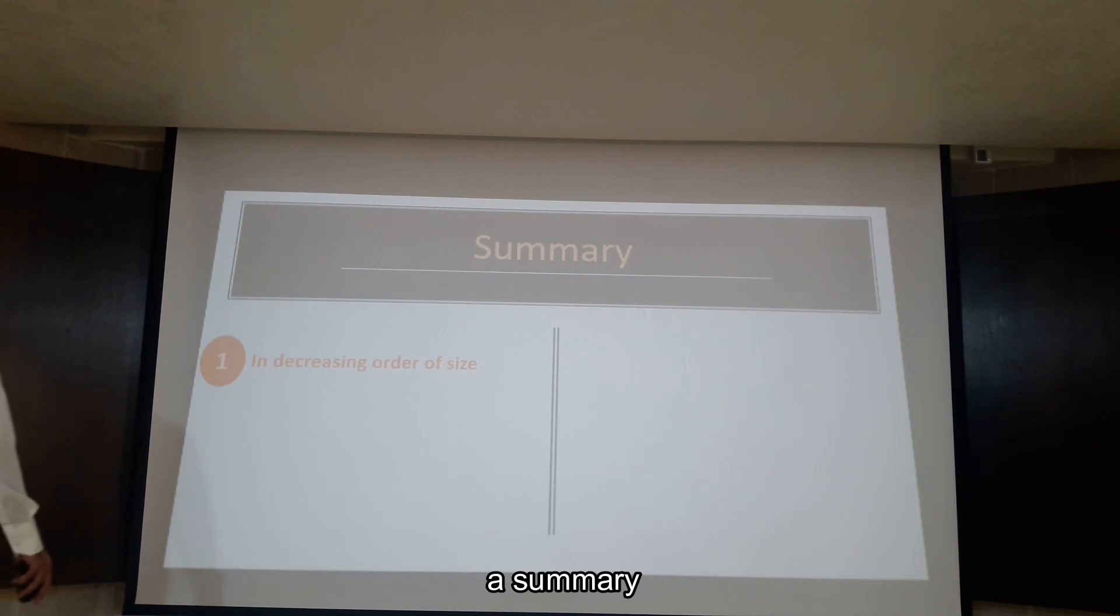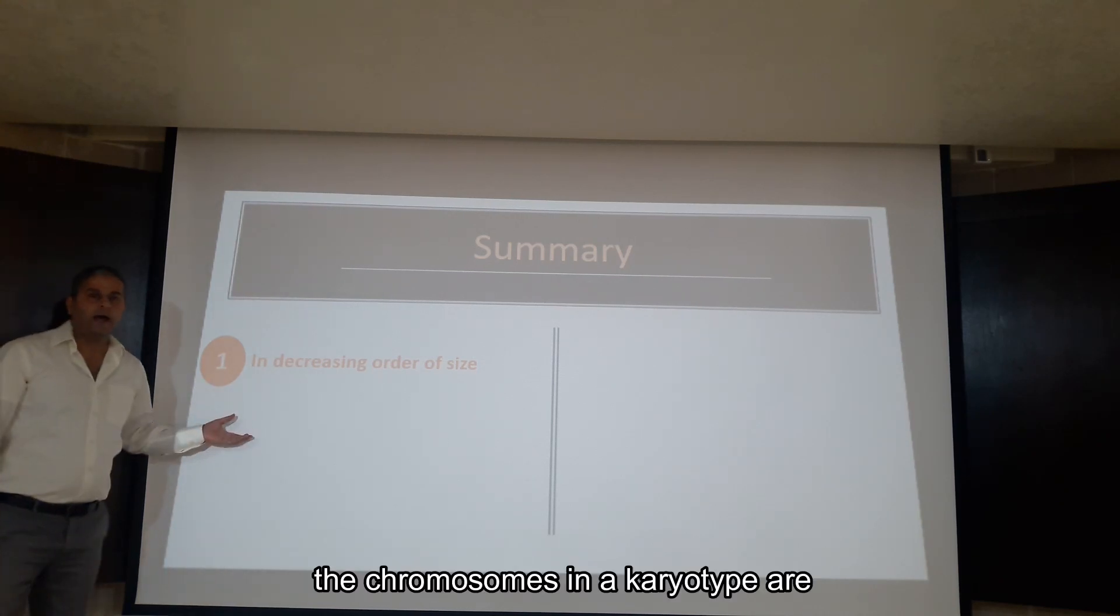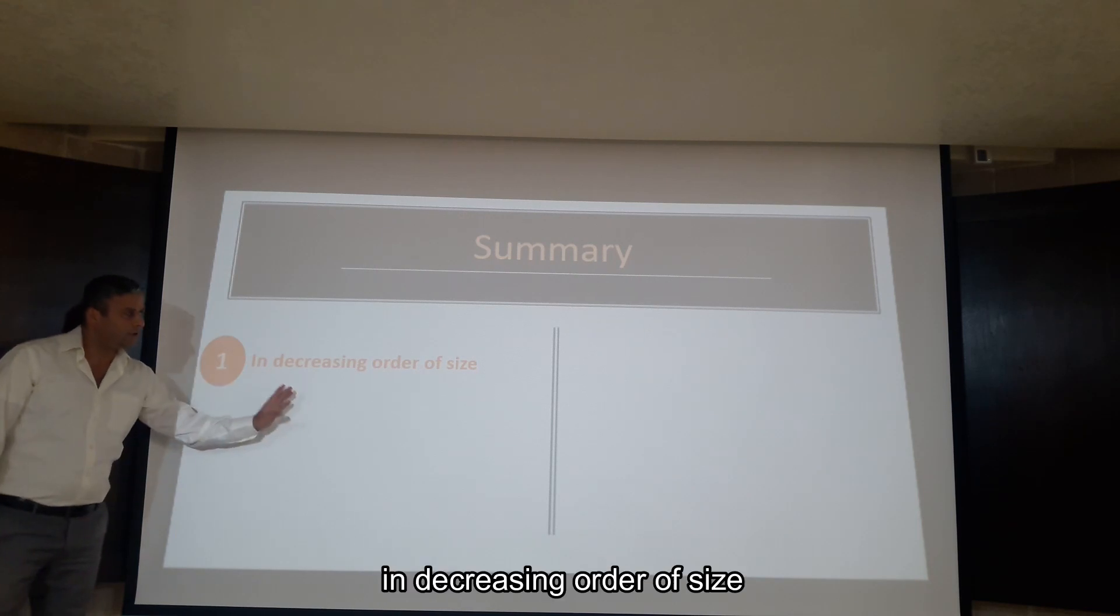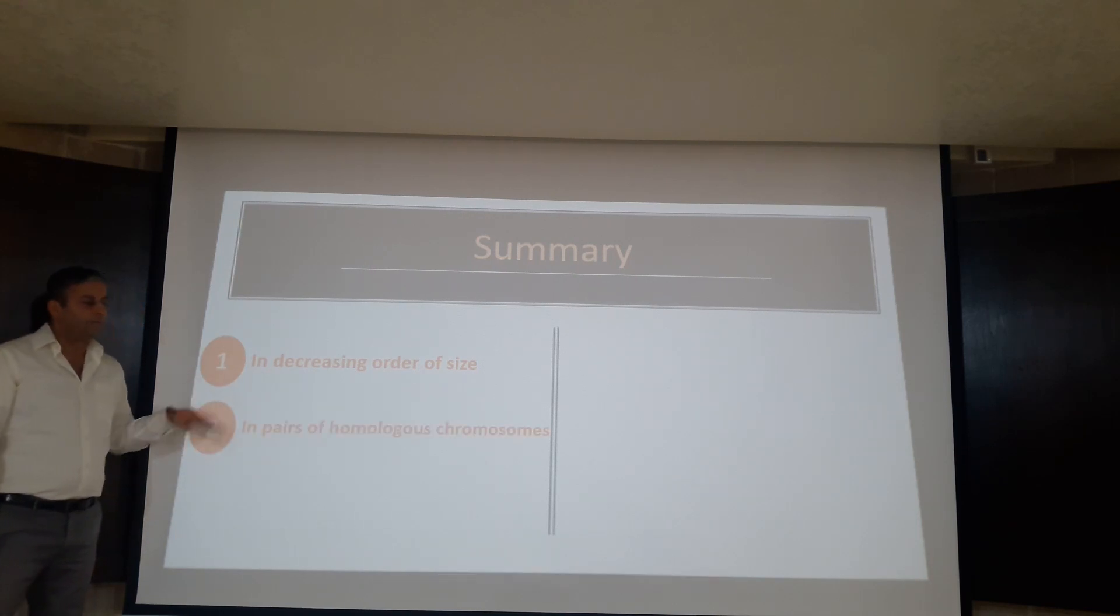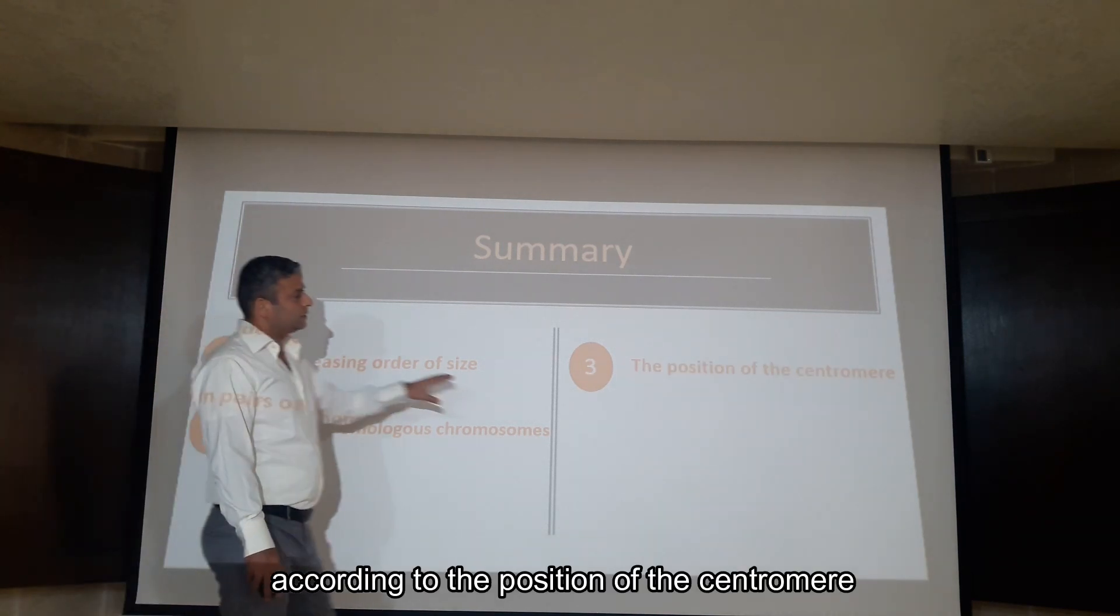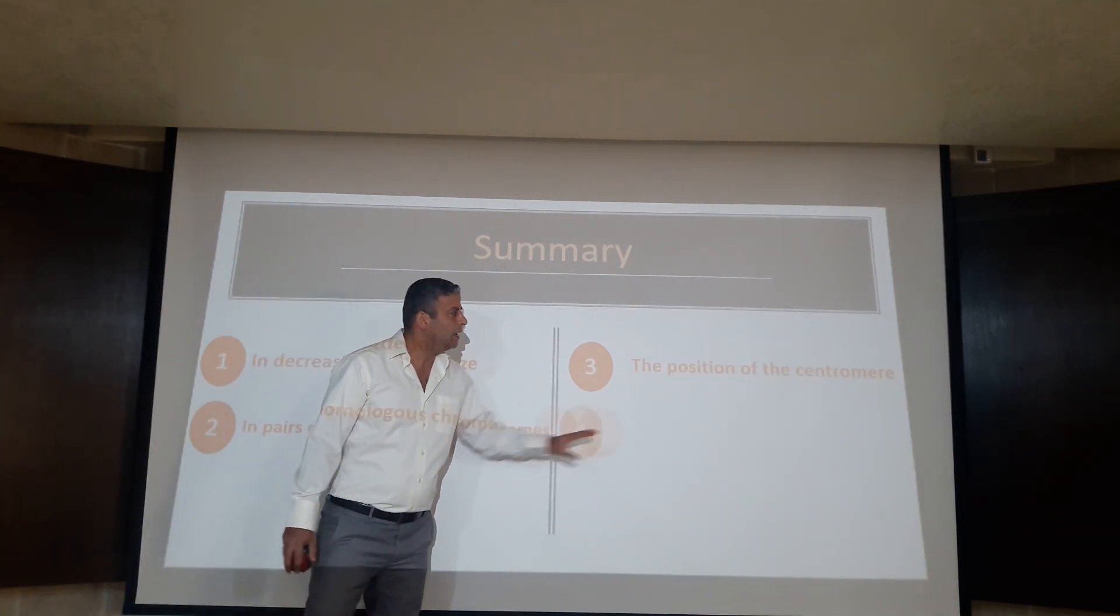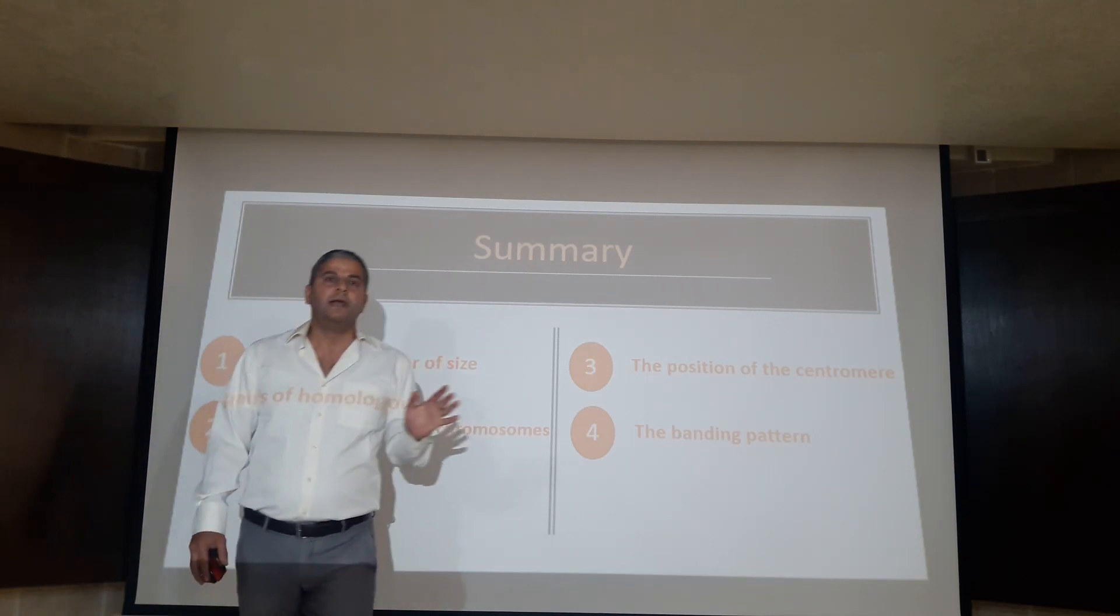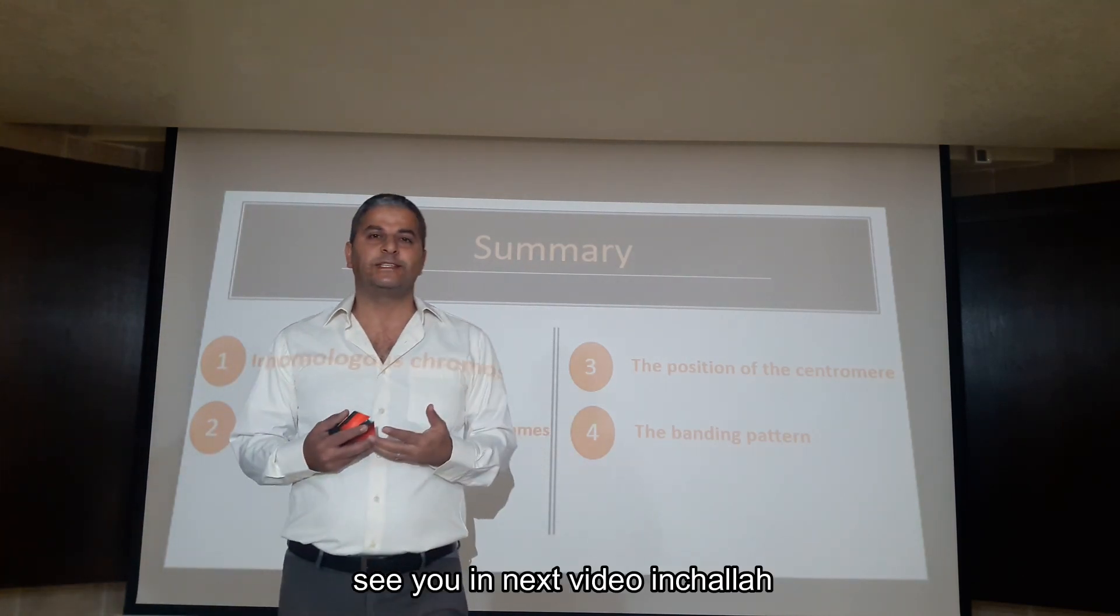Finally, as a summary, chromosomes in a karyotype are classified and arranged in decreasing order of size, in pairs of homologous chromosomes, according to the position of the centromere, and finally, according to the banding pattern. Thanks for watching, see you in the next video, Inshallah.